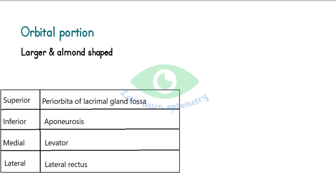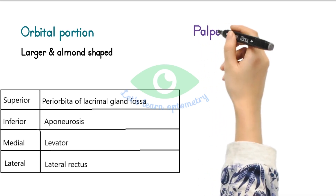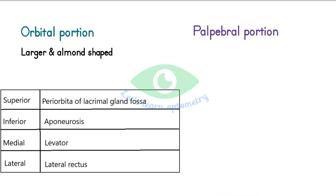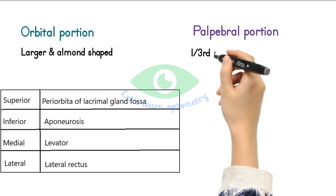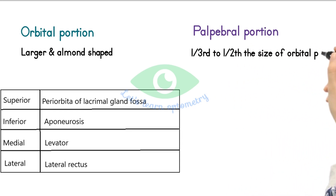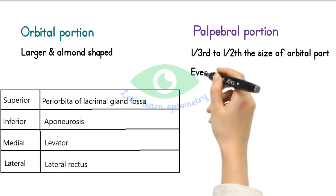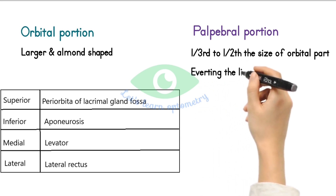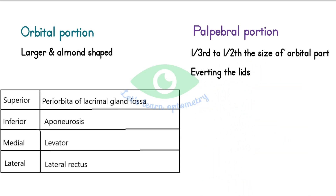The medial edge lies against the levator, and the lateral edge lies on the lateral rectus muscle. The palpebral lobe is one-third to one-half the size of the orbital lobe. If the upper lid is everted, the lacrimal gland can be seen above the edge of the upper tarsal plate.